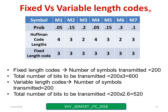Fixed versus variable length code: the probabilities are given, Huffman code lengths we have, and for fixed-length code there are 7 symbols so even if 5 exist I have to take 3 bits. Assuming 200 symbols are transmitted, total bits for fixed code = 3 × 200 = 600. For variable-length Huffman code, average is 2.6, so 2.6 × 200 = 520 bits — saving 80 bits. That is the advantage of variable length coding.